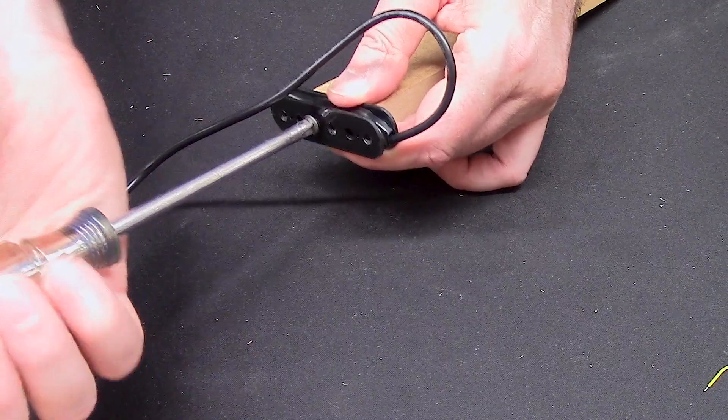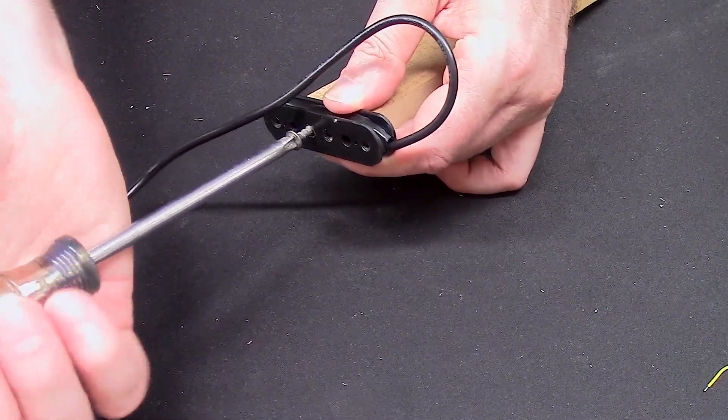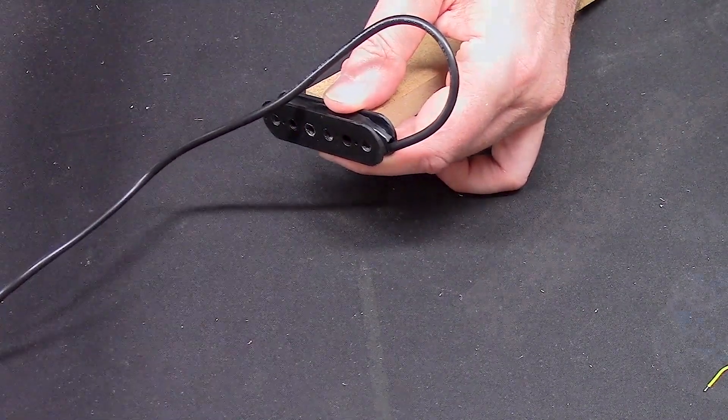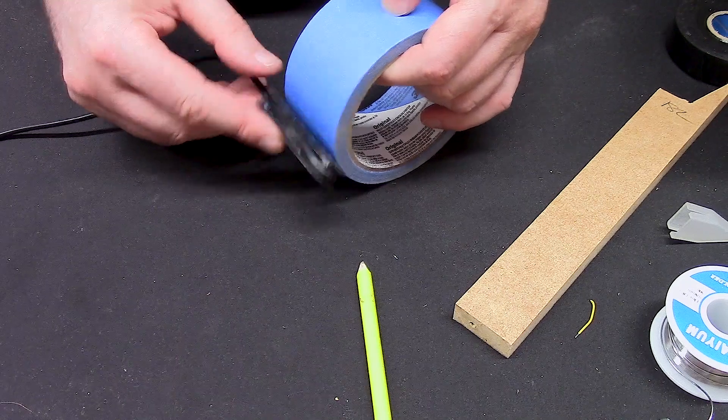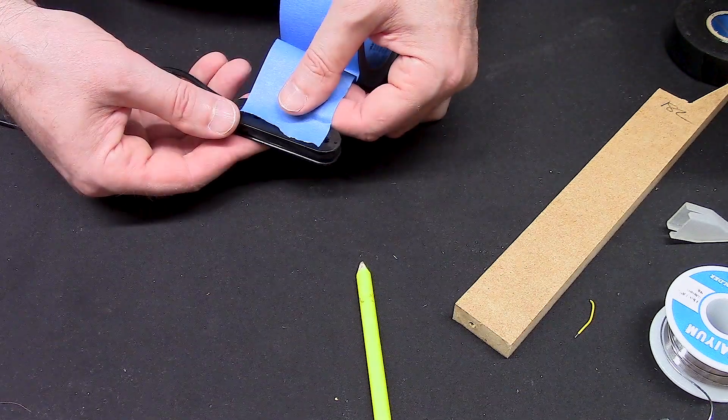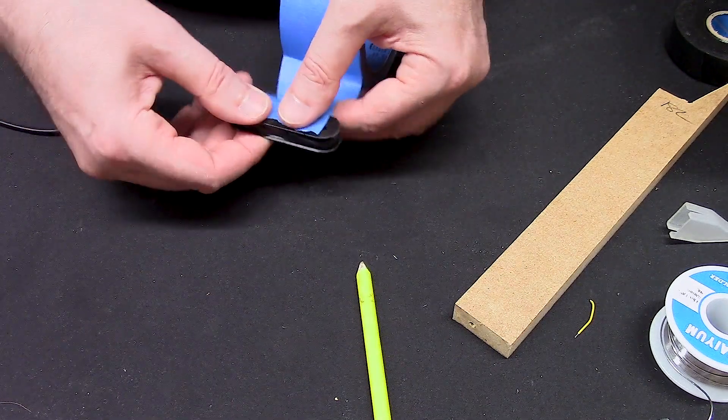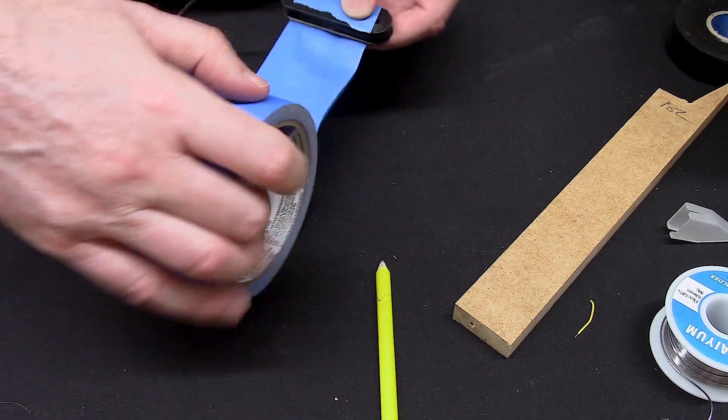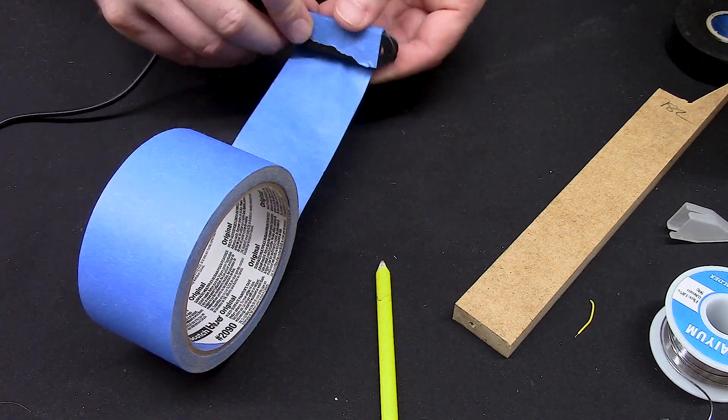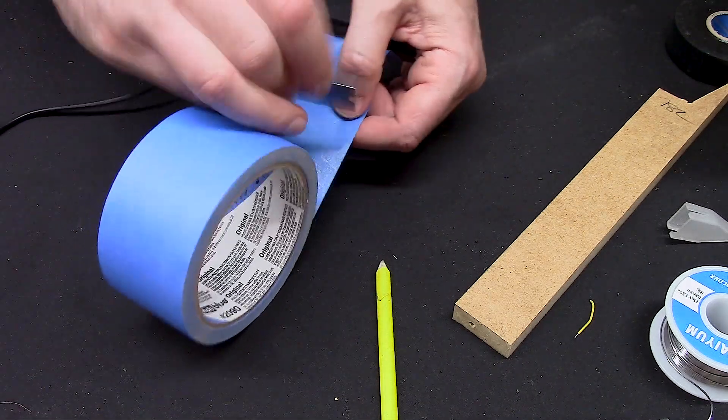We've got the TRS cable soldered to the pickup windings and also wrapped around the bobbin just to help make sure everything stays tight and doesn't accidentally get pulled loose. You could use some shrink tubing to cover the whole thing at this point if you have that big of shrink tubing. I do not.